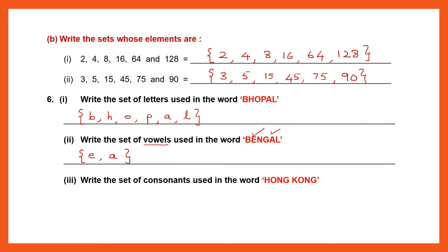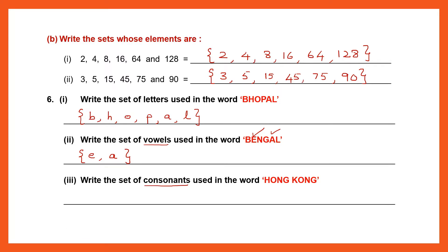Question 3: Write the set of consonants used in the word 'Hong Kong'. Start curly brackets and look out for consonants — don't repeat any letter. H — yes; O is a vowel, skip it; N; G; then K; the next O is a vowel, skip; N is already written; G is already written. So the set of consonants is {H, N, G, K}.